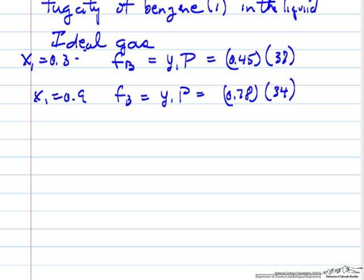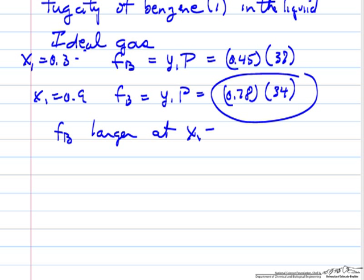So we don't actually have to multiply the numbers out to see that this is a bigger number. So the fugacity of B is larger at x1 equals 0.9. Now note, this is the fugacity of B in the vapor phase, but the fugacity in the vapor equals the fugacity in the liquid for benzene.